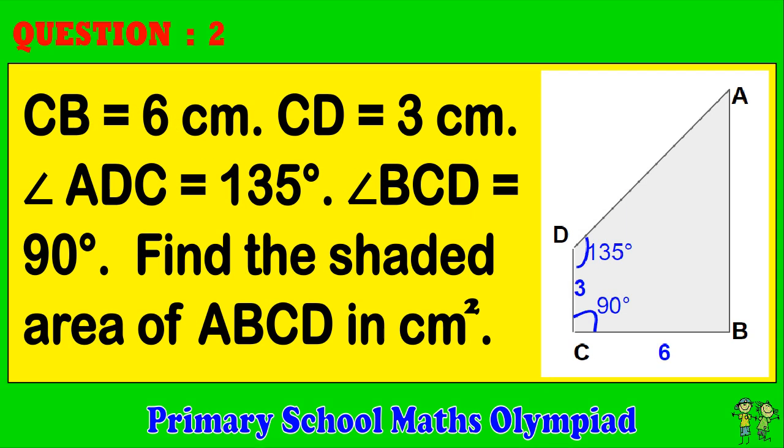Question 2: CB equals 6 cm, CD equals 3 cm. Angle ADC equals 135 degrees. Angle BCD equals 90 degrees. Find the shaded area of ABCD in cm².